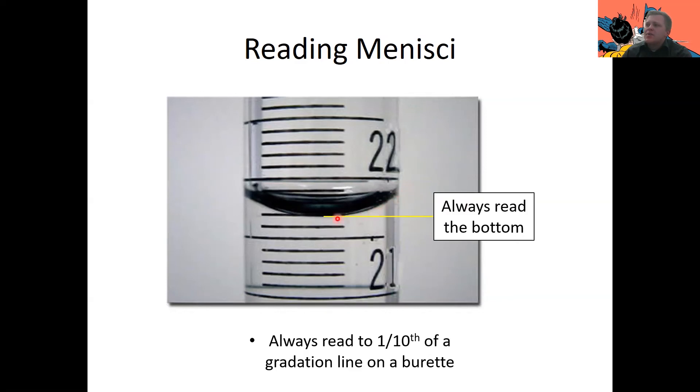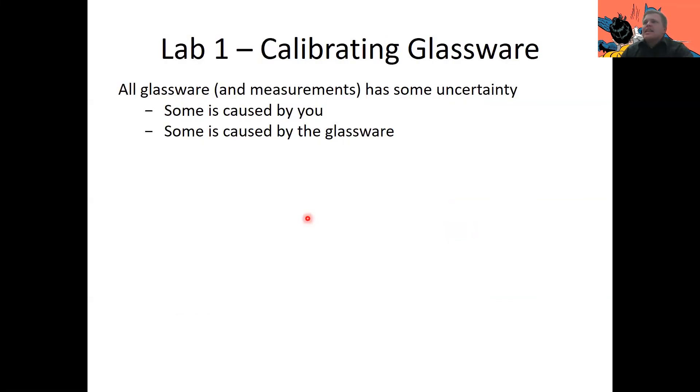So now I said that this could be 21.68 or 21.69, whichever you prefer, or whichever one you think is right. And that gets us into one of the last points we'll cover in this lecture, and that is calibrating glassware. So all glassware that you use has to be calibrated. Not just calibrated by one scientist, but it needs to be calibrated by every scientist that uses it. The reason for that is all glassware and really all measurements have some uncertainty associated with that. Some of that is caused by you and your personal biases and how you make the measurement, and some is caused by uncertainty in the glassware or the balance or whatever you're using.